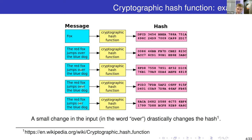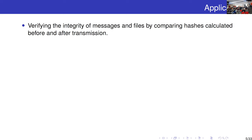Regarding these resistances: collision resistance is to find any two messages such that they have the same hash. Pre-image resistance is to find a message given a hash. There are many applications of cryptographic hash functions, and they appear in almost all devices in the modern digital world.